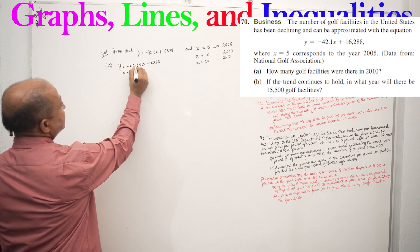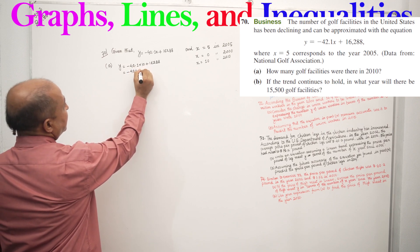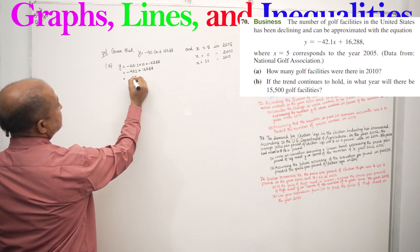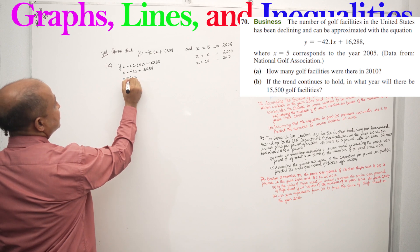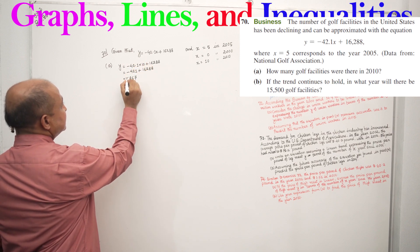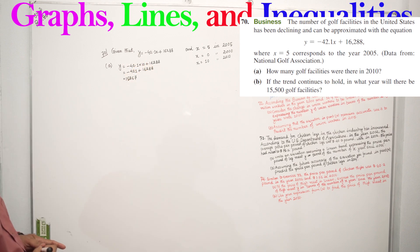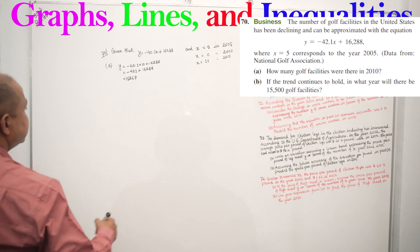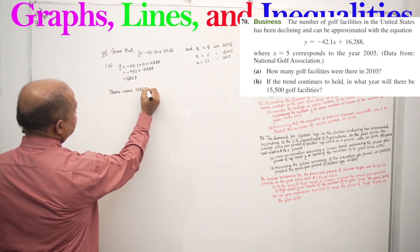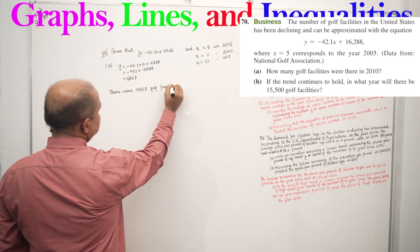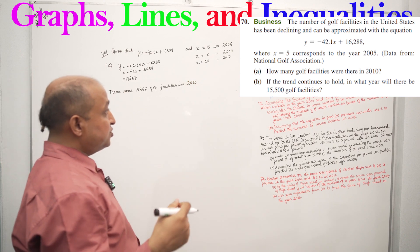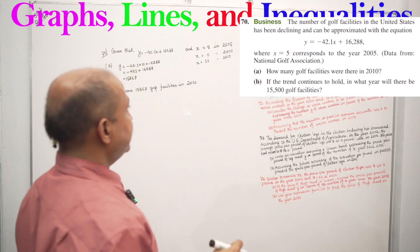Y equals minus 421 plus 16288, which gives us 15,867. So the answer is there were 15,867 golf facilities in 2010.